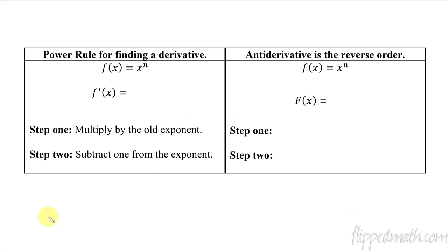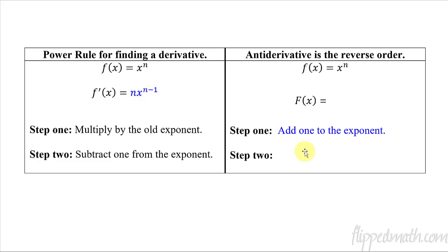Let's talk first about the power rule and then how you take the anti-derivative. With power rule, you multiply by the old exponent — bring it down to the front — and then subtract 1 from the exponent. Now for anti-derivative, I'm going to swap these steps and do the inverse of them. Instead of subtracting 1 from the exponent, I add 1 to the exponent. And then instead of multiplying, I divide by the new exponent.